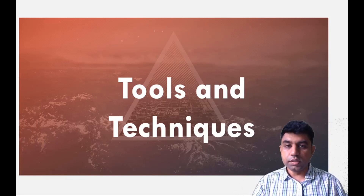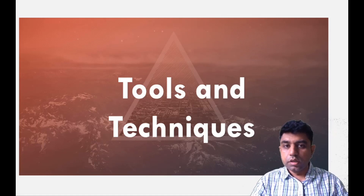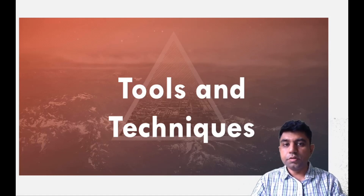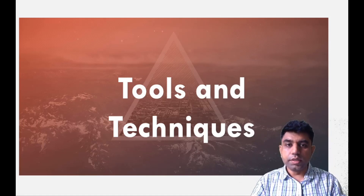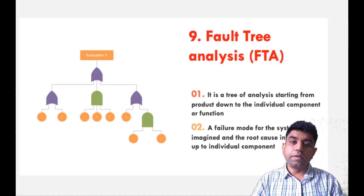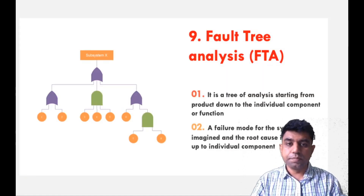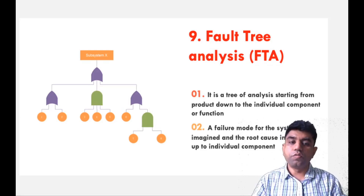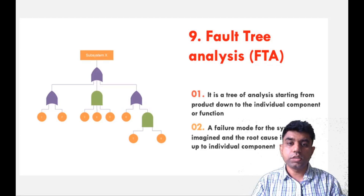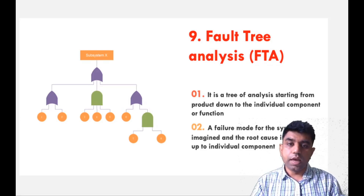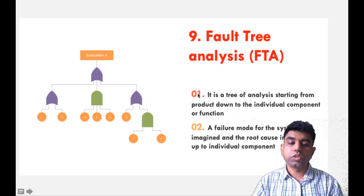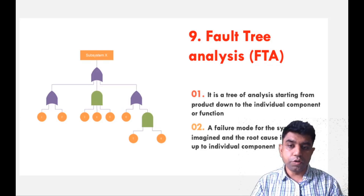In today's class, I am going to continue with two other processes to improvise the quality. The next process, and a very famous one, is FTA — Fault Tree Analysis — in which we analyze how a particular failure happens. It is a tree of analysis starting from a product down to the individual component or function.